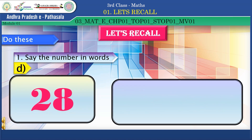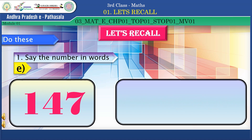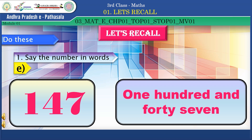Next, what is the number? Yes, twenty-eight. Children, say it in words: T-W-E-N-T-Y, twenty, E-I-G-H-T, eight — twenty-eight, very good! Next, read this number. Yes, one hundred and forty-seven. Say in words: O-N-E H-U-N-D-R-E-D and forty-seven — one hundred and forty-seven.